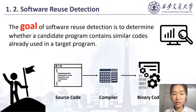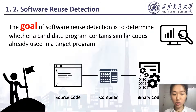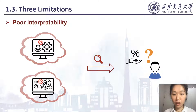Since the source code of a candidate program is typically unavailable in reality, many binary code reuse detection approaches have been proposed. However, these approaches suffer from three limitations.